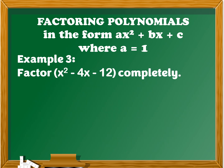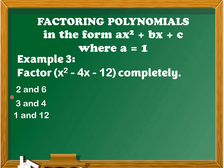For example, number 3: factor x squared minus 4x minus 12 completely. The constant term is negative 12. The factor pairs of 12 are: 2 and 6, 3 and 4, and 1 and 12. Since the constant term is negative, one factor is positive and the other is negative, so we get the difference of the two factors. The differences are: 6 minus 2 is 4, 4 minus 3 is 1, and 12 minus 1 is 11. The middle term coefficient is negative 4, so we consider 2 and 6 as the factors of 12.